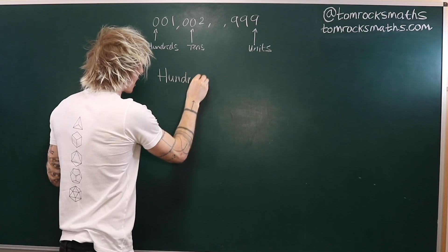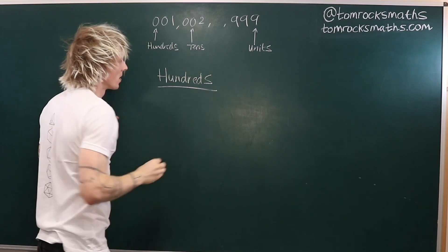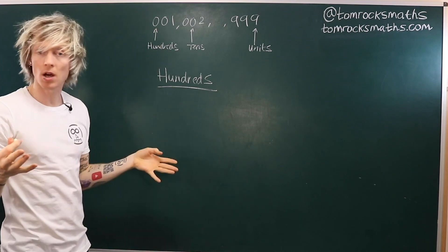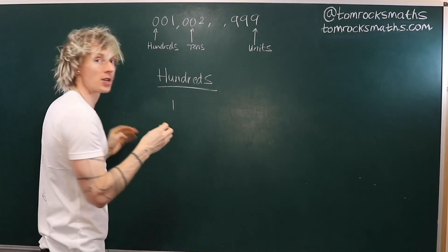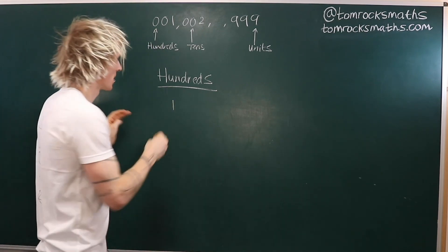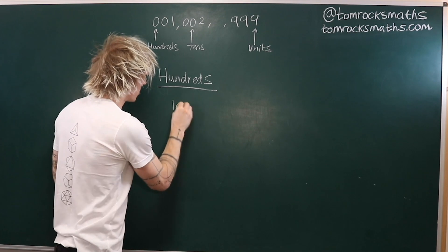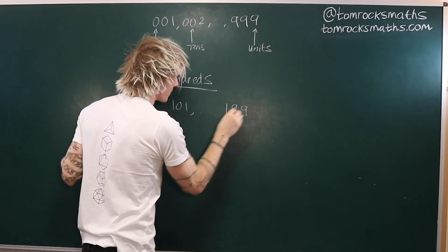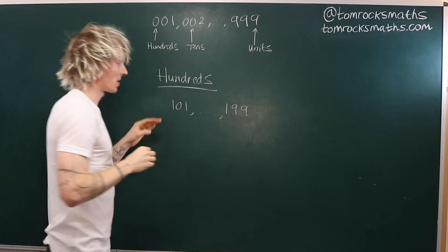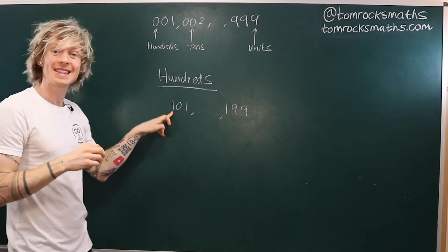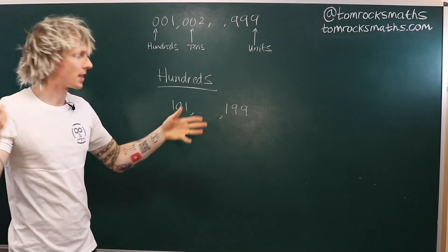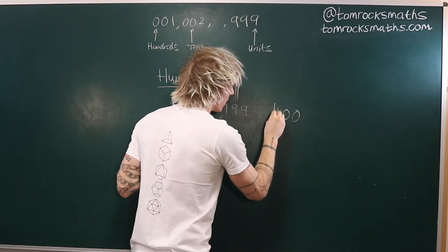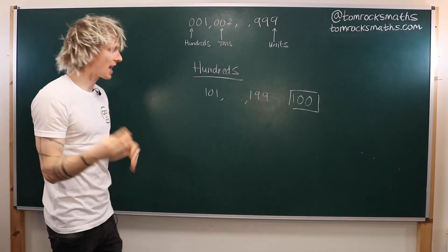Starting with the hundreds column, the only time we have a 1 there are the numbers between 100 and 200 — basically 100 up to 199. Those are the only numbers with a 1 in the leading column, and there are exactly 100 of them.